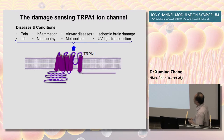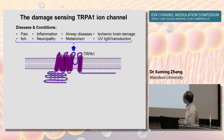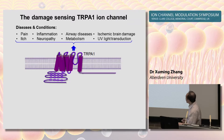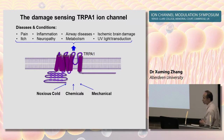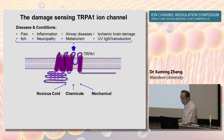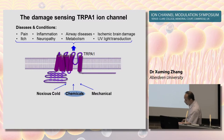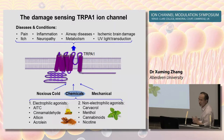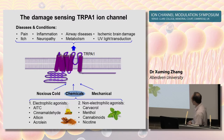These ion channels have been implicated in diverse medical conditions and diseases such as pain, inflammation, and airway diseases. The diversified function of TRPA1 channels is tied to its activation by a range of stimuli, including thermal, chemical, and mechanical stimuli. TRPA1 can be activated by over 100 chemical agonists belonging to two main categories: electrophilic and non-electrophilic agonists.